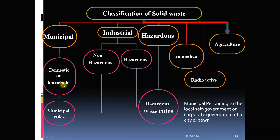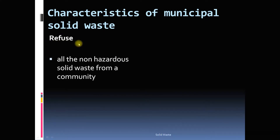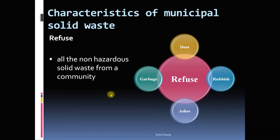Municipal solid waste includes domestic or household solid waste as well as non-hazardous industrial waste. Non-hazardous industrial waste means, for example, if some industry is cooking food for its workers, the waste generated from that kitchen comes under municipal solid waste. However, if there is processing waste that may be hazardous, that has to go for other treatment options. We are going to discuss municipal solid waste.